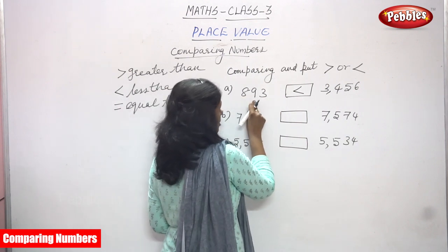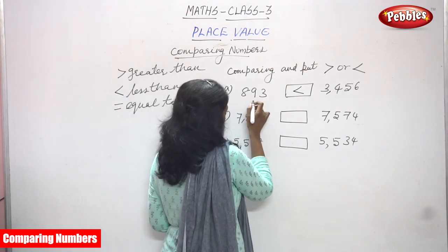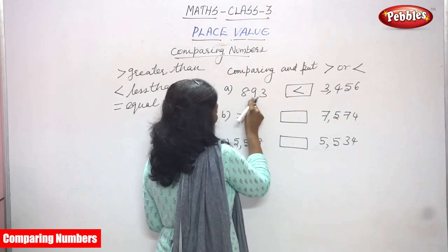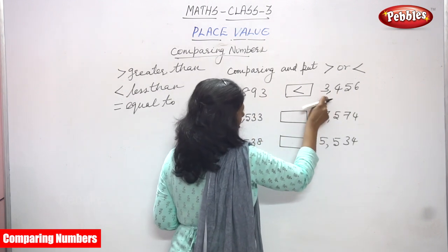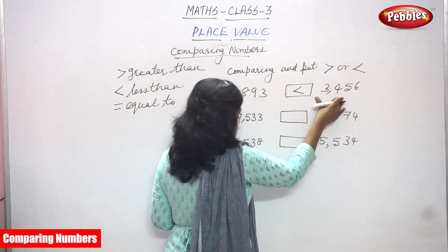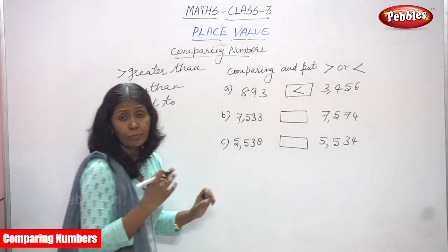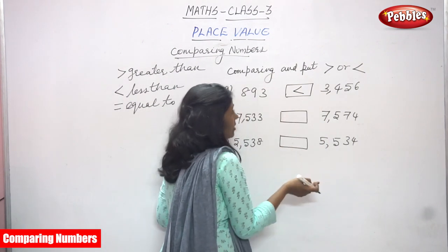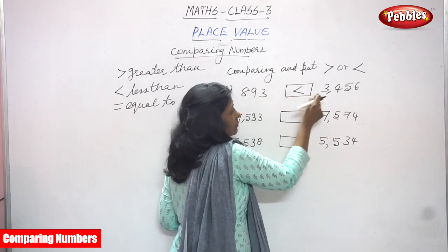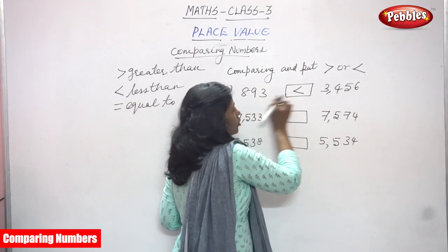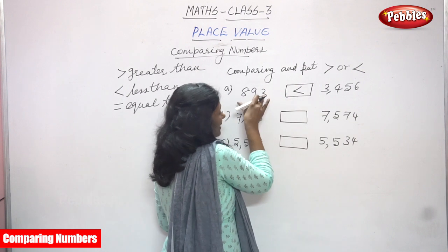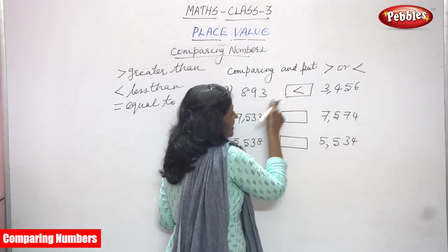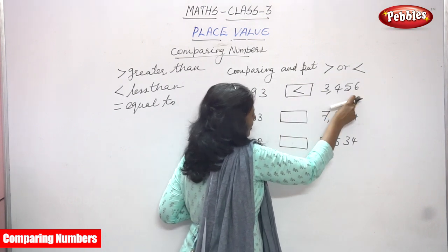So 893 is a three-digit number and 3456 is a four-digit number — ones, tens, hundreds versus ones, tens, hundreds, thousands. You are comparing a three-digit to a four-digit number, and a four-digit number is the greater one. So 893 is lesser than 3456.